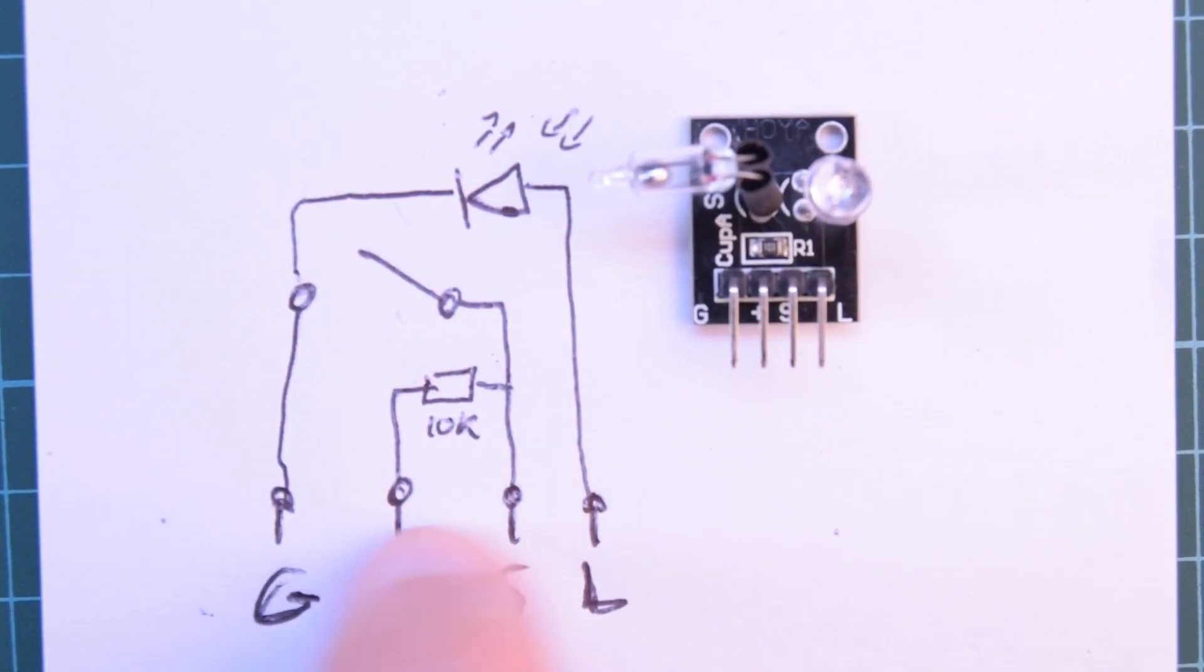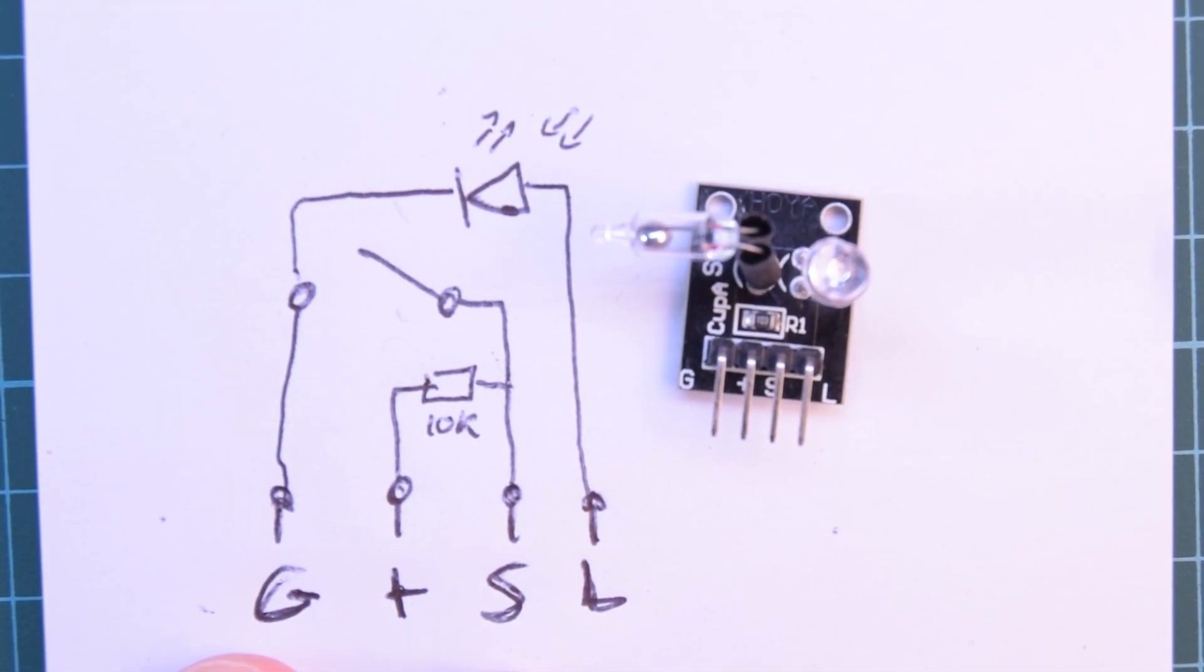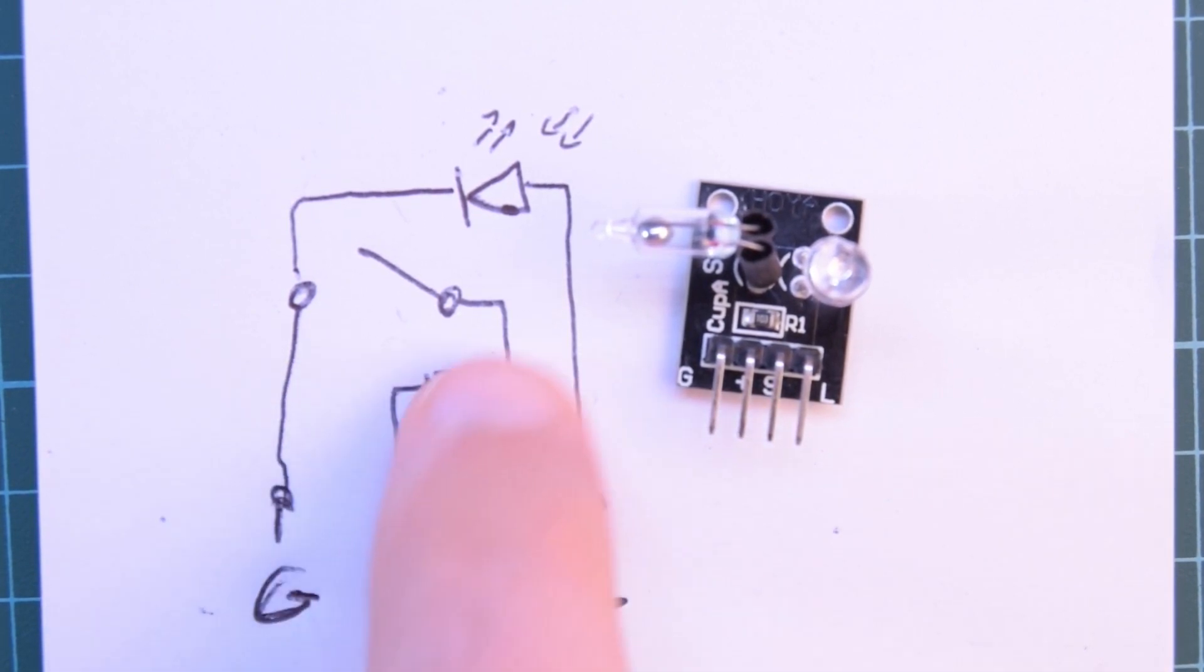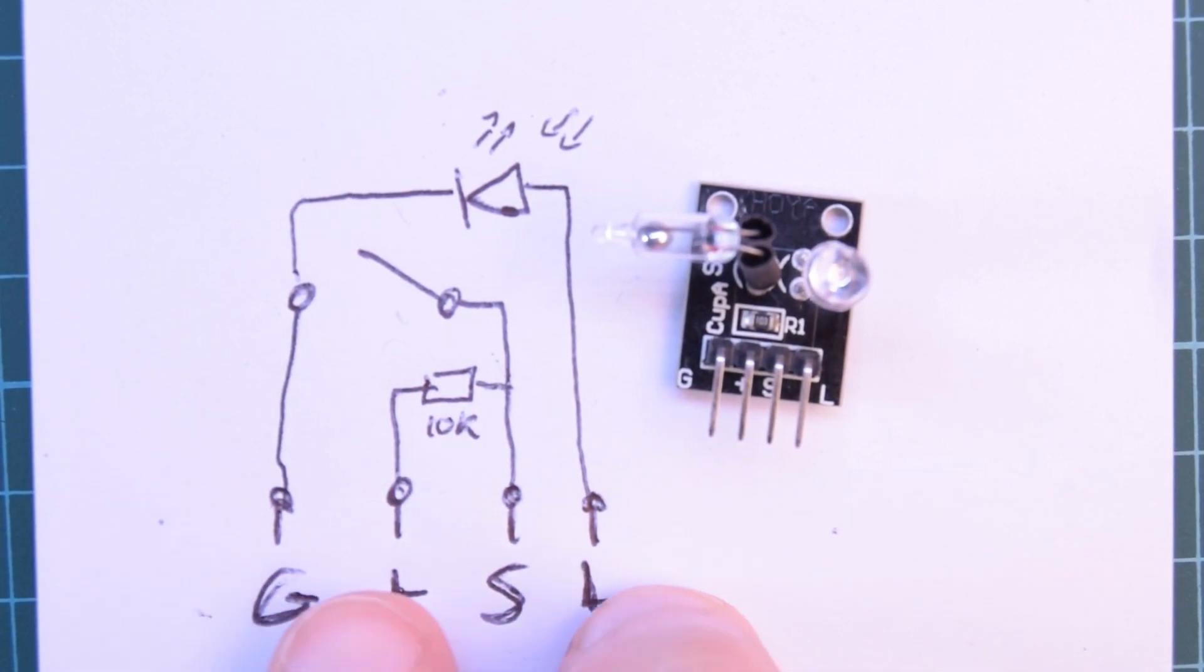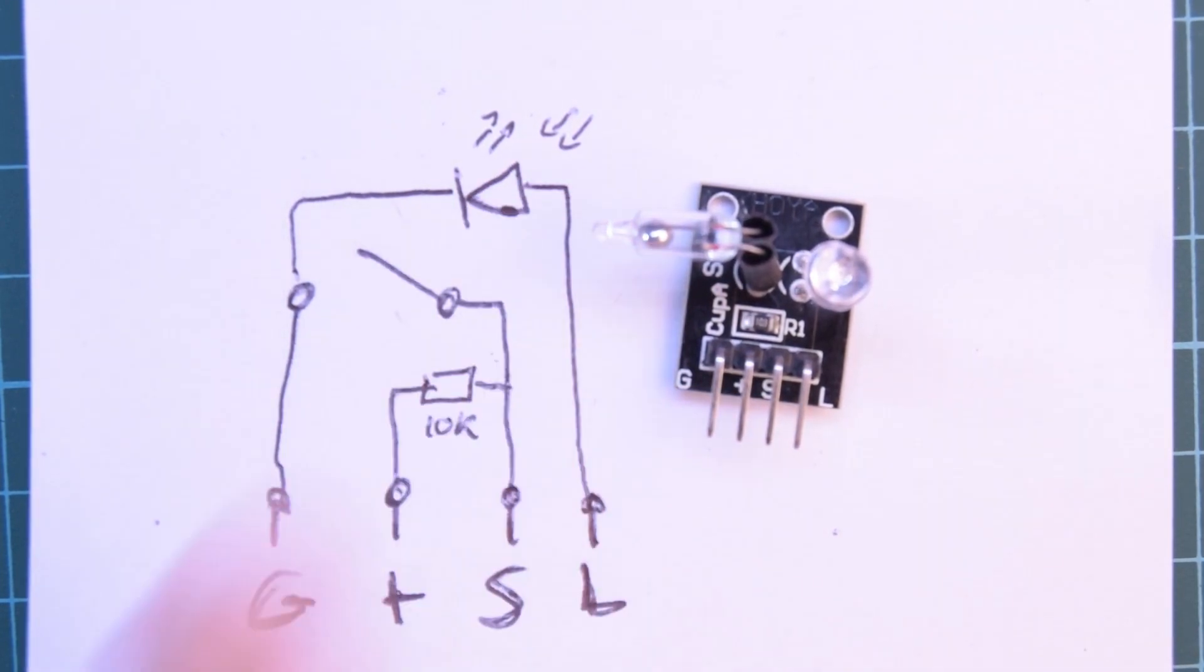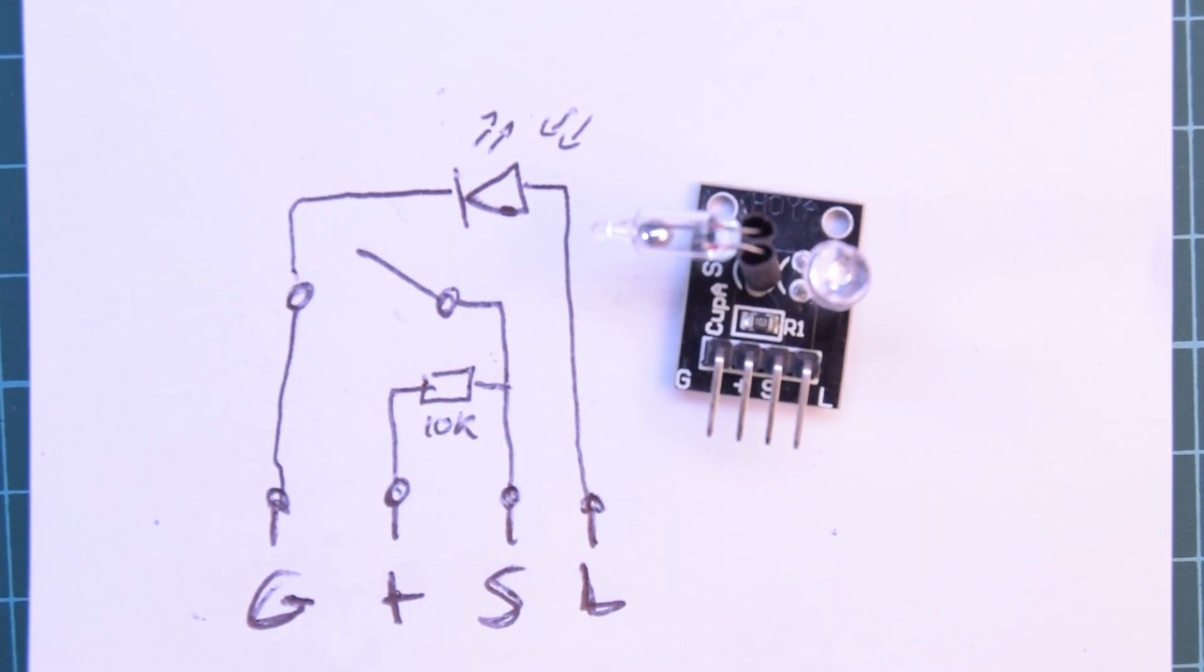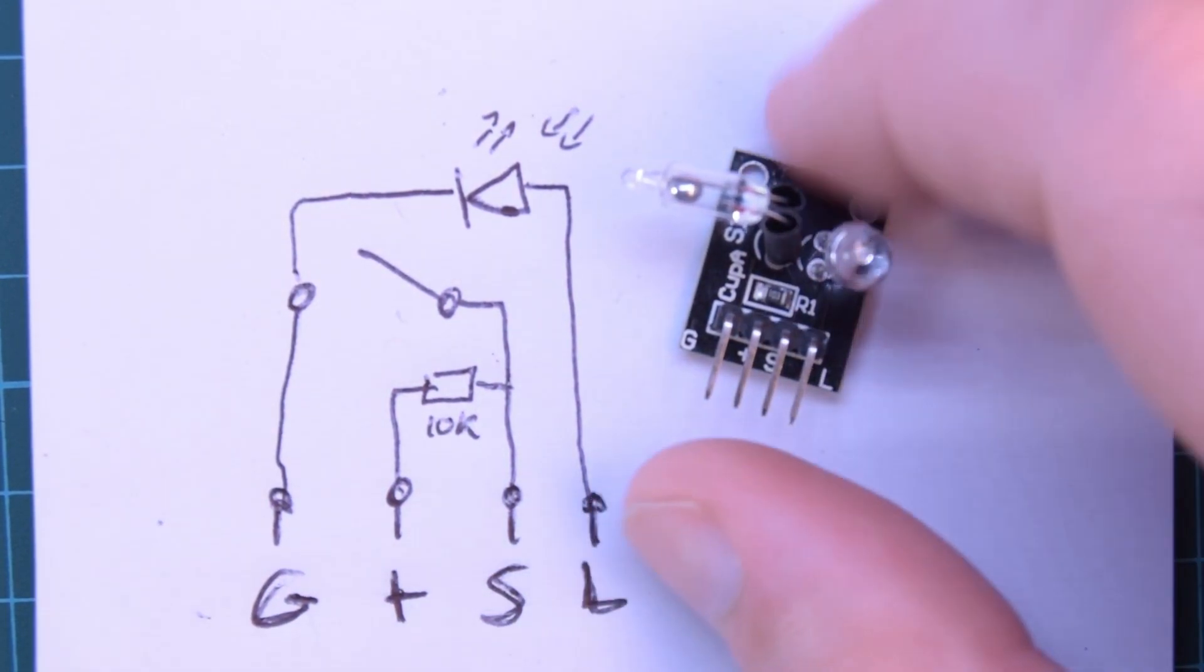So yeah you just got to be careful how you implement this but otherwise if you just go between S and G then you have your switch. If you go simply between the positive and G then you have your switch with the 10k series resistor. If you go L and G that should be your light detecting diode. I figure that's what it is because that's really small forward voltage. And yeah you could theoretically use both at once.